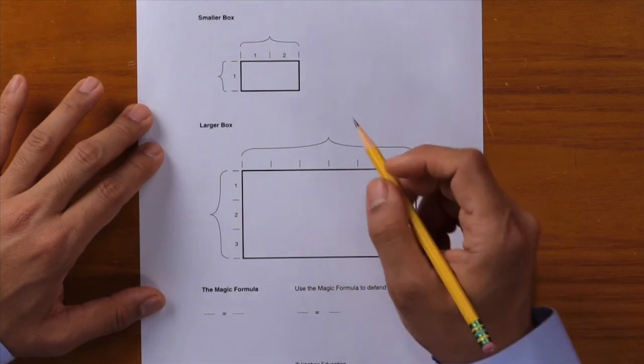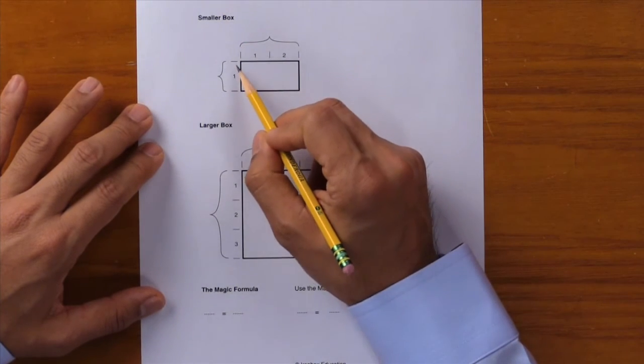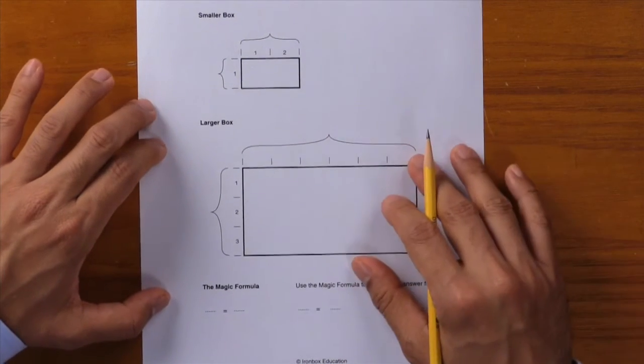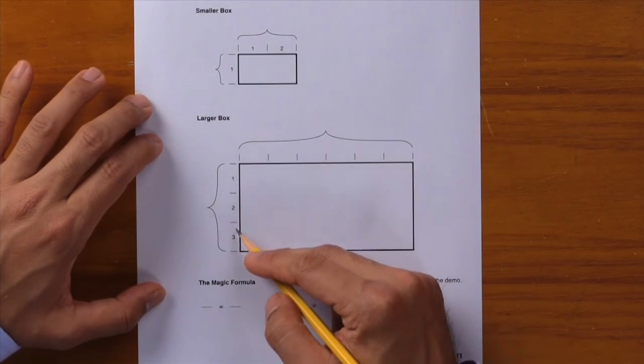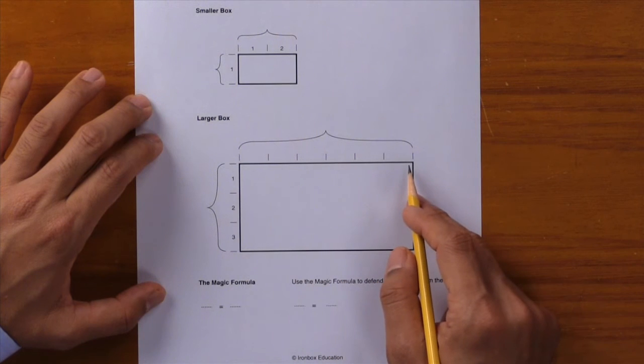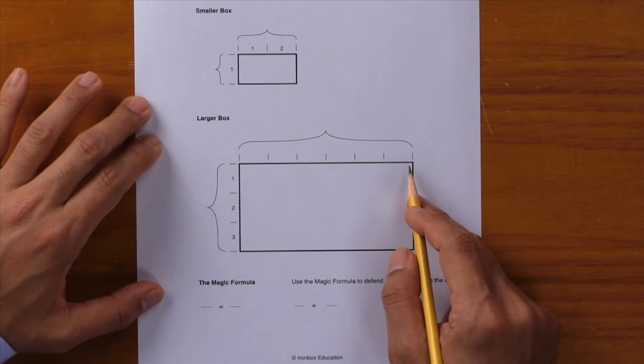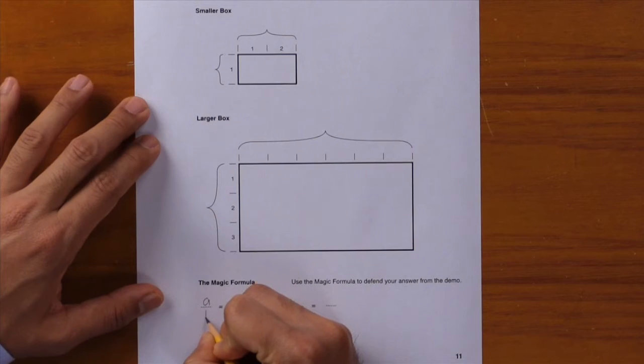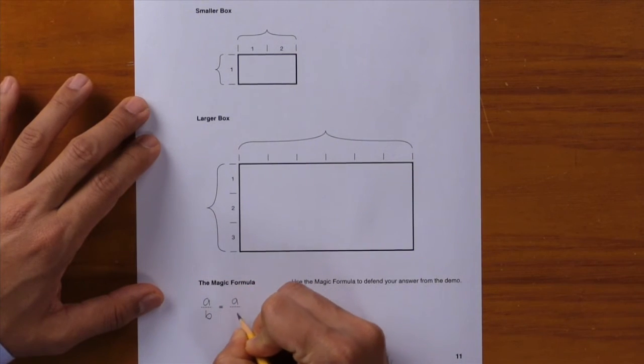We knew that in the smaller photo it was one unit tall and two units wide. In the larger photo we knew that it was three units tall, and we needed to figure out how wide it was without actually counting. In order to solve the proportion, we need the magic formula. Here it is: just write down a over b equals a over b.